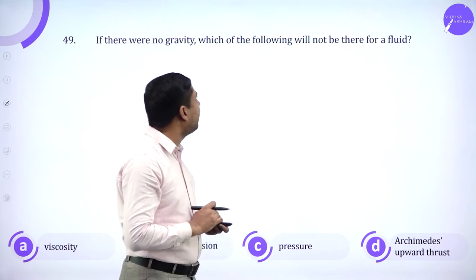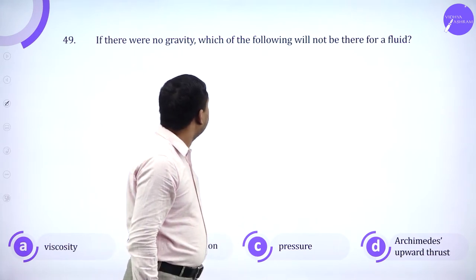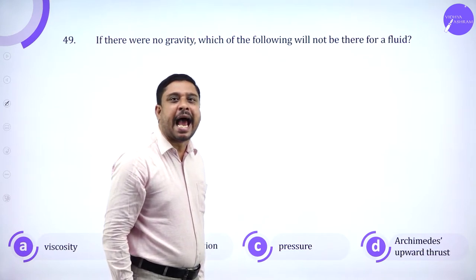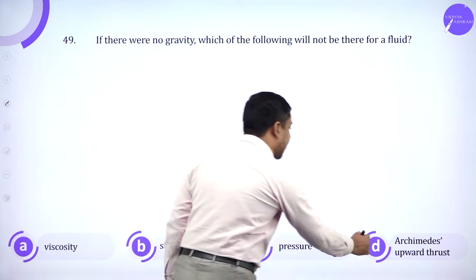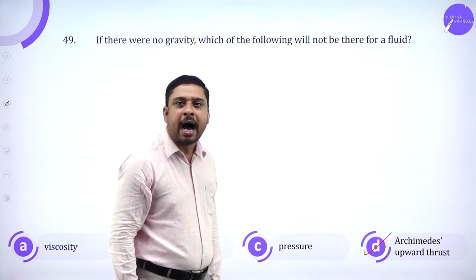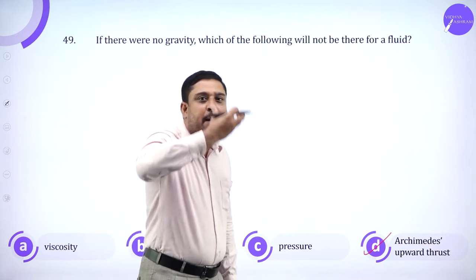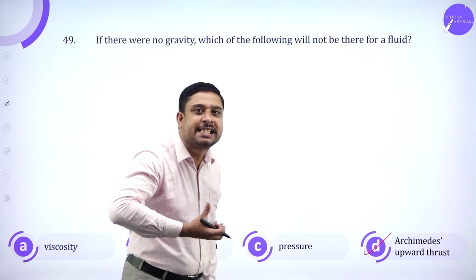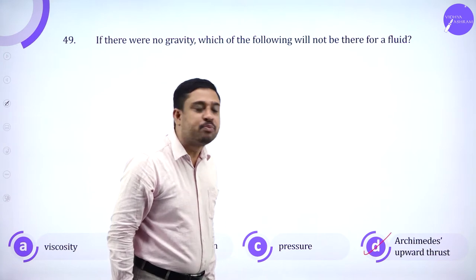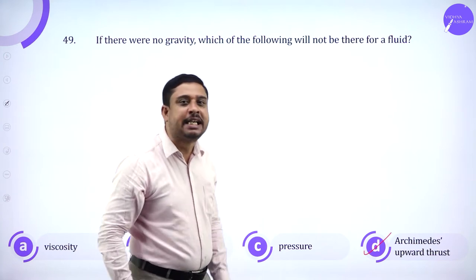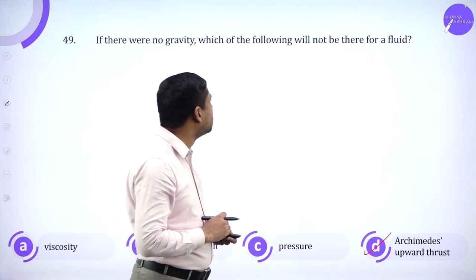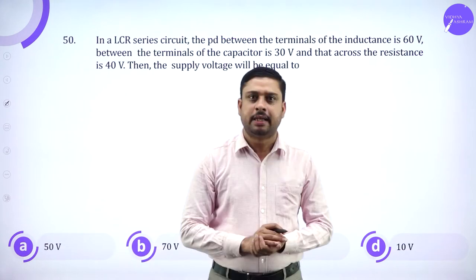If there was no gravity, which of the following will not be there for a fluid? In the absence of gravity, the fluid wouldn't have Archimedes upward thrust. That upward force, the force exerted by the fluid on the surface, is absent. So without gravity, Archimedes upward thrust is not possible.